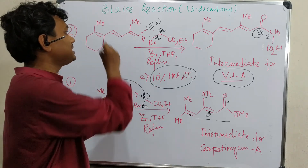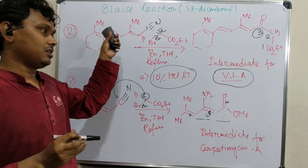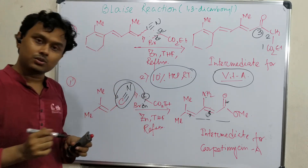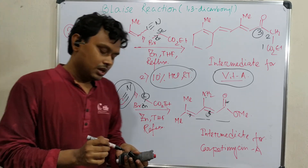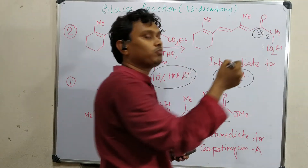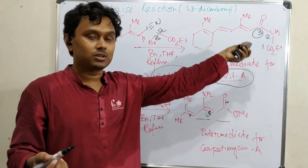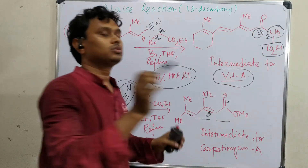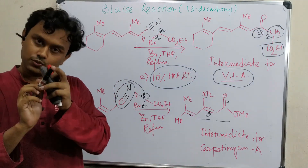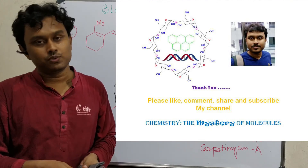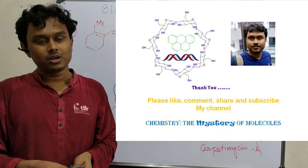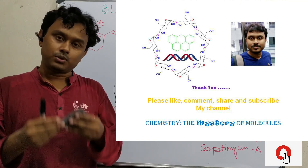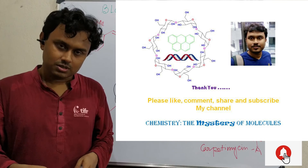So finally, we have discussed today the Blaise reaction, which is an analog of the Reformatsky reaction where addition is done with a CN group instead of a carbonyl. This produces finally a 1,3-dicarbonyl compound. It is an efficient, strategic way to prepare 1,3-dicarbonyl compounds where one end is an ester, and this contains an active methylene group. Thanks for watching. If you like my teaching, please give a like and share this video. Please subscribe to Chemistry and History of Molecules and press the bell icon to get notifications. Stay happy, stay blessed. See you in my next video.